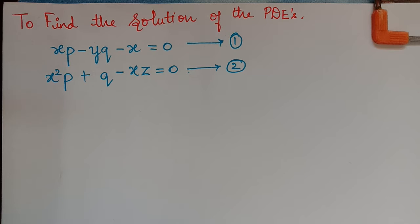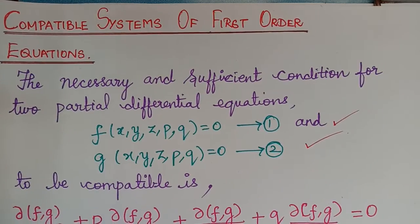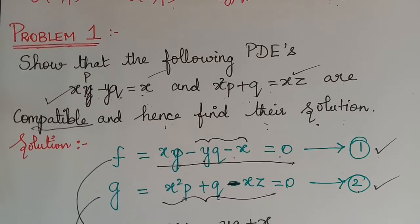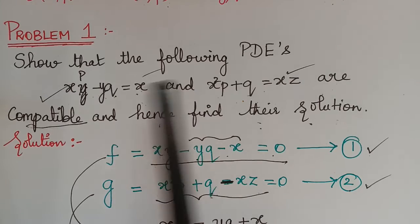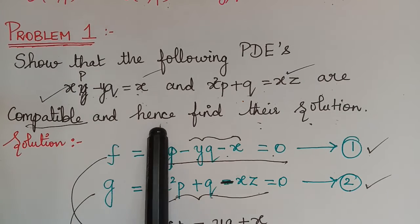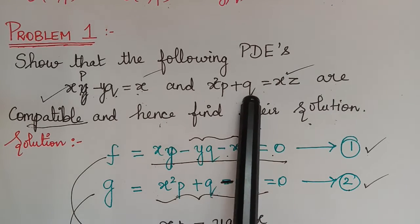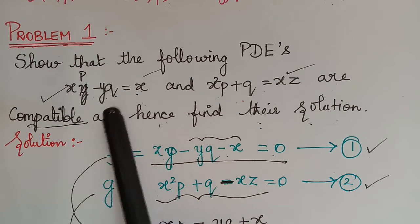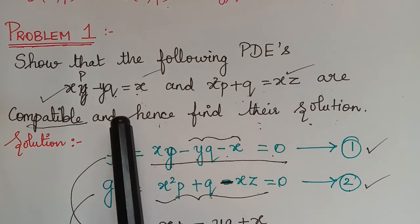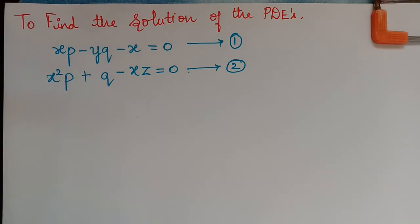Hello students, this is a continuation of our previous lecture on compatible systems of first order equations, where we dealt with the problem and proved that the two given partial differential equations are compatible. The second part of the question is to find the solutions of these PDEs.